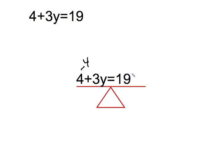So if I take 4 off of this side, I need to take 4 off of this side as well. Now my two 4s balance out, cross each other out, and 19 minus 4 is going to give me 15. So that means 3y, or 3 times y, is equal to 15.